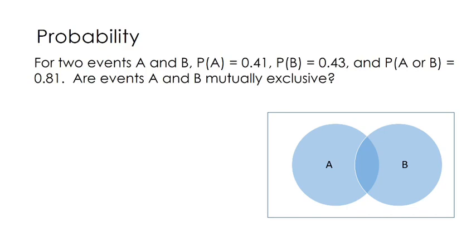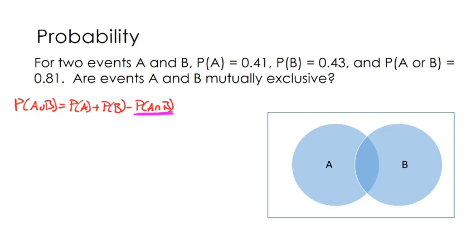What we know is this: the probability of A or B happening is equal to the probability of A plus the probability of B minus the probability of A and B. And what we've talked about is if the events are mutually exclusive, the probability of A and B happening is 0 — there would be no overlap between A and B. So, if I take this addition rule relationship that we know is true, let's substitute in what we know and see what we can figure out.